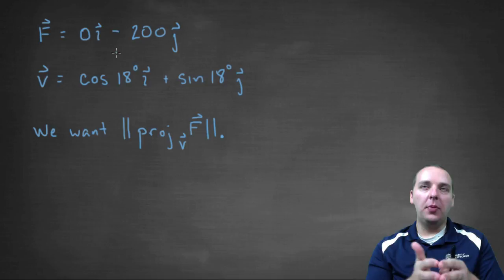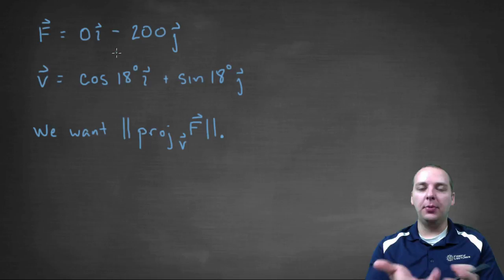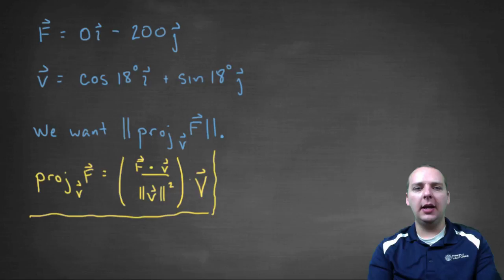What is it that we want? We want the projection of F onto V, but actually we don't even need that. All we want is just the magnitude of that projection. That's really all we're after, and that's going to be the amount of force we have to push with in the opposite direction.